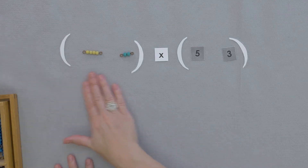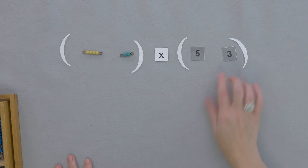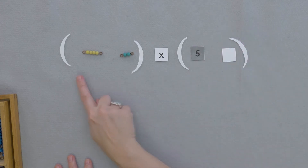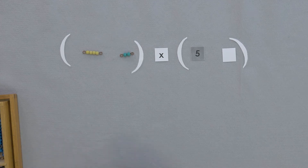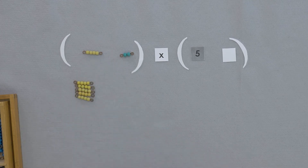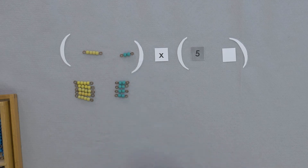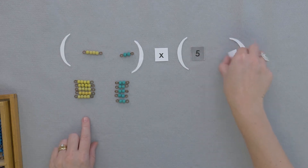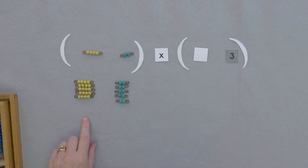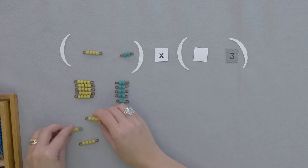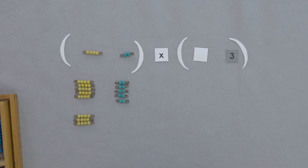Now we need to multiply everything here times everything here. I'm going to turn over this multiplier first and we'll do everything in these parentheses times five. Four, five times. And two, five times. Now we'll multiply everything here times our three multiplier. So we're going to have four times three and two times three.